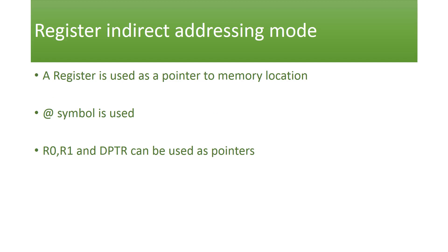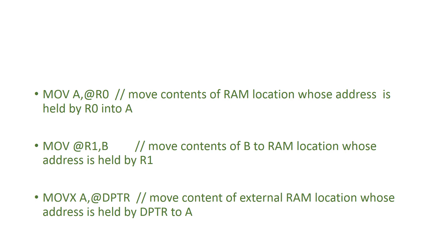This is a direct addressing mode, and this is the register indirect addressing mode. In this mode, a register holds a memory address. The '@' symbol is used — it indicates register indirect addressing. The registers that can be used are R0, R1, and DPTR. The '@' prefix will point to the memory location.